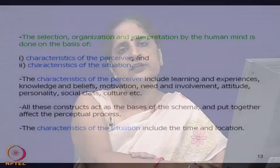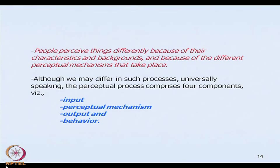People will perceive things differently because of different perceptual mechanisms. Although we differ in our processes, the perceptual mechanism basically comprises four components: input, the perceptual mechanism, output, and behavior. The input refers to the various stimuli that surround an individual and exist in his environment — it is the input which is selected or given attention to by our senses.